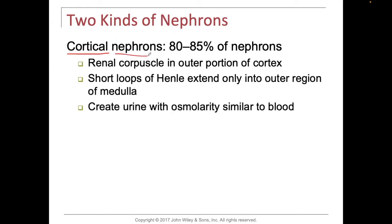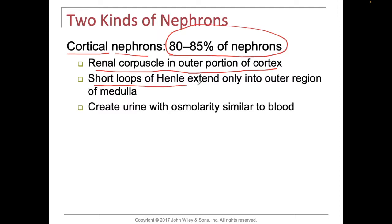The cortical nephrons represent 80 to 85 percent and are primarily found and located in the cortex. You've got the renal corpuscle in the outer portion of the cortex, and the only thing that extends into the medulla are these short loops of Henle that extend only into the outer region of the medulla. It creates urine with osmolarity similar to blood.